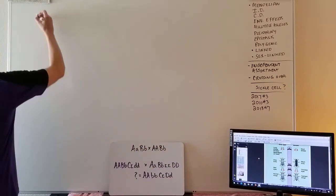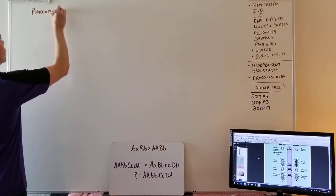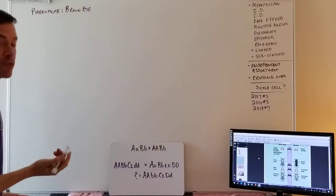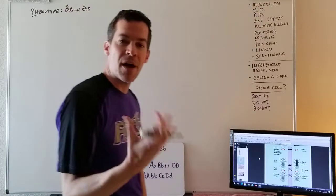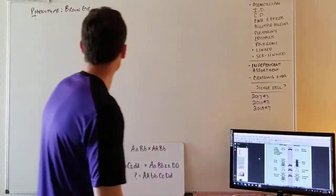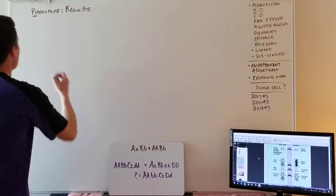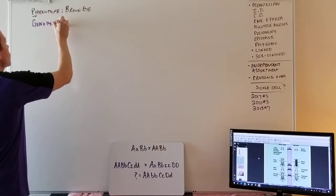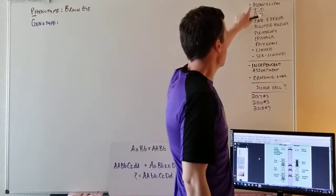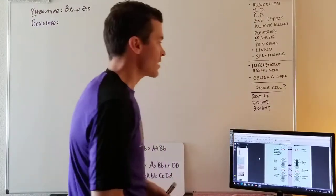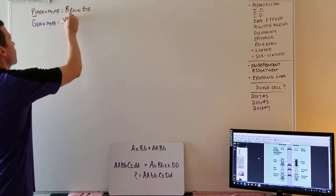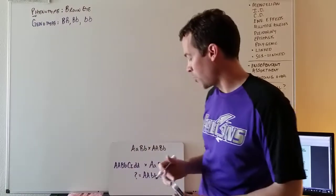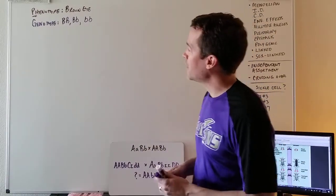A little vocab: phenotype means physical characteristics — what we can see. Your phenotype is determined by your genotype. For now we'll pretend it's just Mendelian genetics with dominant and recessive only. So we'll say there's brown eyes and blue eyes and nothing else — three possible genotypes for eye color in our simplified model.